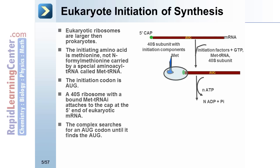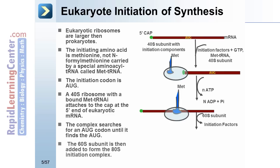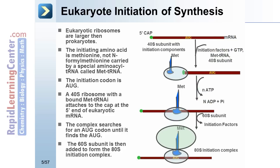ATP is hydrolyzed to ADP, releasing an inorganic phosphate. The complex then searches for an AUG codon until it finds the AUG. The 60S subunit is then added to form the 80S initiation complex. Remember, what we're looking at here is eukaryotic initiation of synthesis.